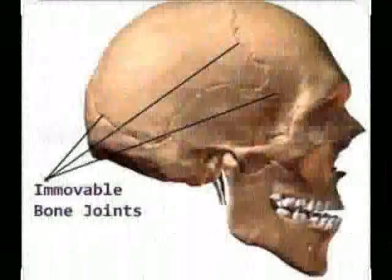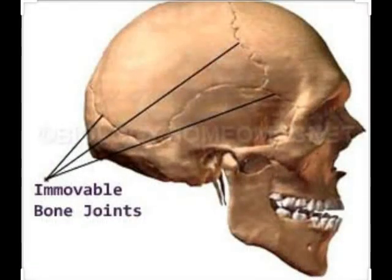Immovable joints are joints that cannot move. These joints are present only in the skull.